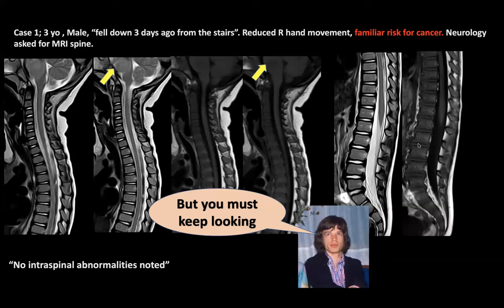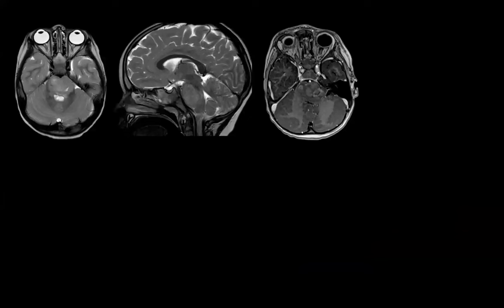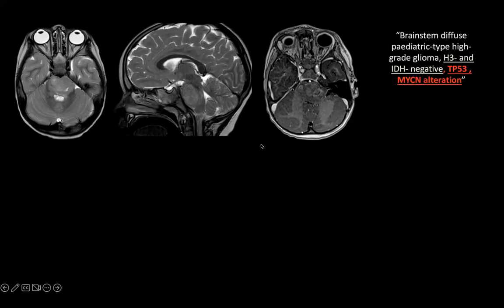So we look at something like this. We say the spine is normal, but the child has a tumor. Remember the family history of cancer. We do the brain — and of course, this looks like DIPG, a bit more aggressive than usual. But then the biopsy reveals the histone mutation is negative and IDH is also negative. However, this child has TP53 and MYC alteration. Something is unexpected; something doesn't really add up to what you would have expected.